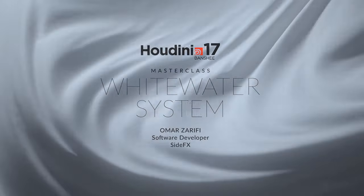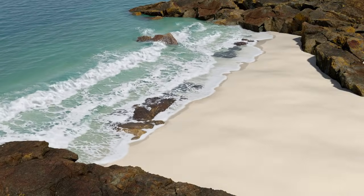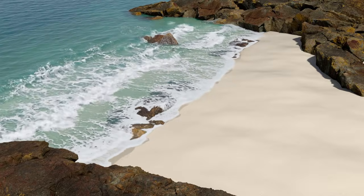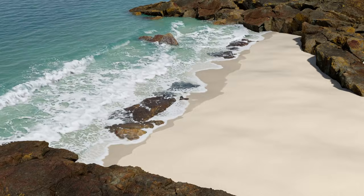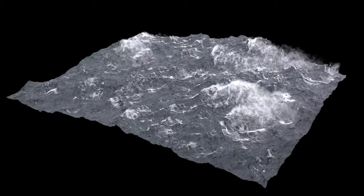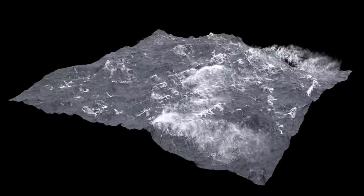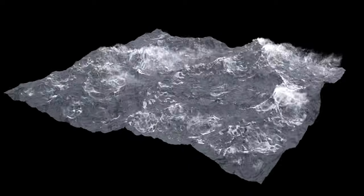Let's begin by establishing the job of the whitewater system, which is to enhance the look of a fluid animation with secondary effects that are difficult to capture with a single simulation, such as spray, foam, and bubbles. Here we have a beach where the whitewater system was used to generate the foam on top with intricate patterning, making the scene look quite a bit more natural and realistic. Here's another example where splashes and spray were added on top of an ocean patch to really sell the energy of the system and the rich interactions between the surface and the surrounding wind.